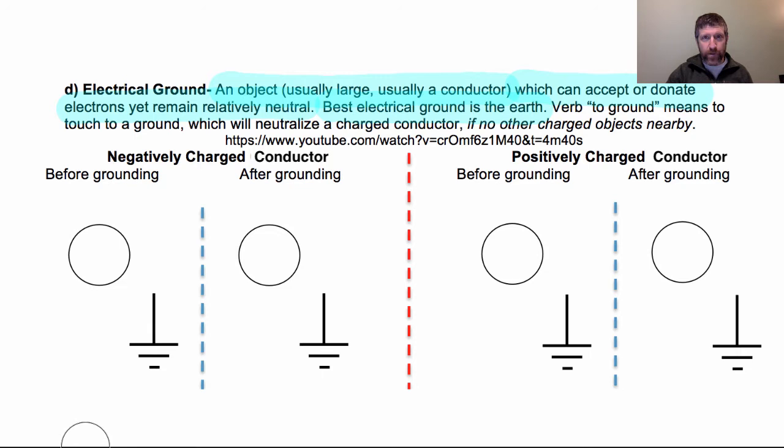In other words, you put a bunch of electrons, millions of electrons even, in the Earth, it's still neutral, because they spread out so very far apart, and ultimately, they will be neutralized by some ions in the air or whatever. So, the Earth is an awesome ground, and even just a large object can be a good ground as well. The verb to ground means to touch an object to a ground or connect it electrically with a conductor, and it will neutralize a charged conductor if no other charges are nearby. Let's take a look at this YouTube video that explains that.